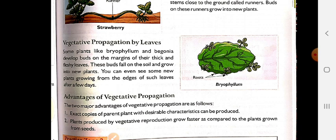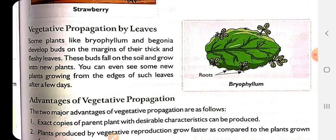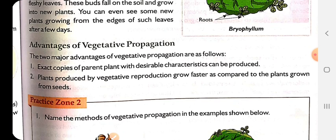Next comes the advantages of vegetative propagation. The biggest advantage is that we can produce exact copies of the parent plant, because we take a part from the parent plant and grow it. So the new plant is exactly the same copy of the parent plant. Another advantage is that plants produced by vegetative propagation grow faster compared to plants grown by seeds. Seeds can take more time, but when plants grow from parts, they do not take much time.